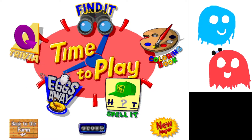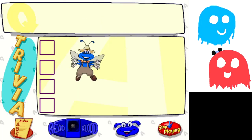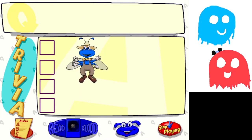Yeah, so we got five different games. There's a trivia game, Find It where I'll be like find the calf on the farm, there's a coloring book, a spell it out game, and then a special game called Eggs Away. Let's start with the trivia. Hard. Are you ready for some trivia? Let's do it.